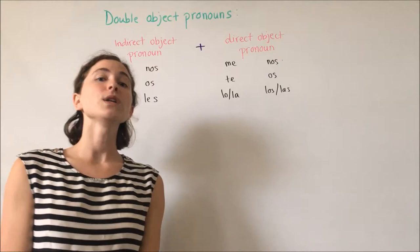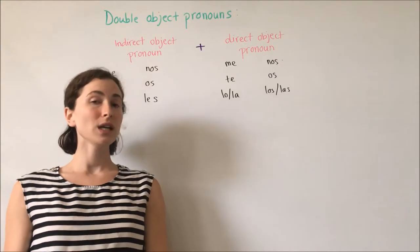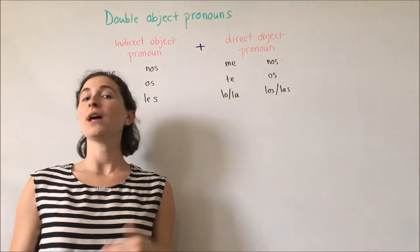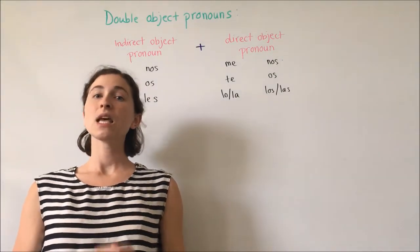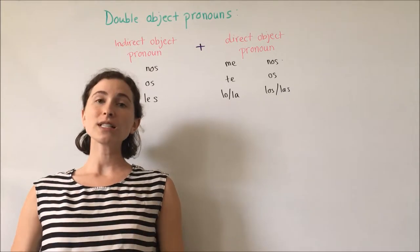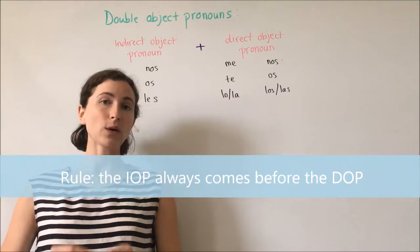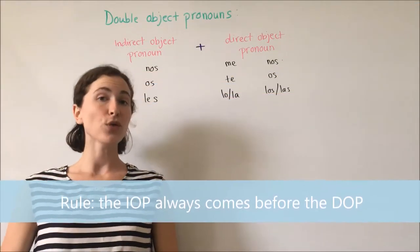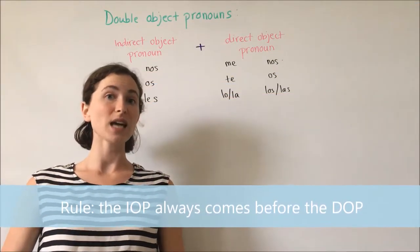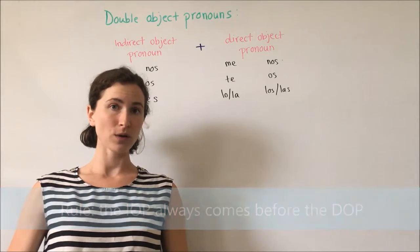When using indirect object pronouns and direct object pronouns together in a sentence, the indirect object pronoun must always come before the direct object pronoun.